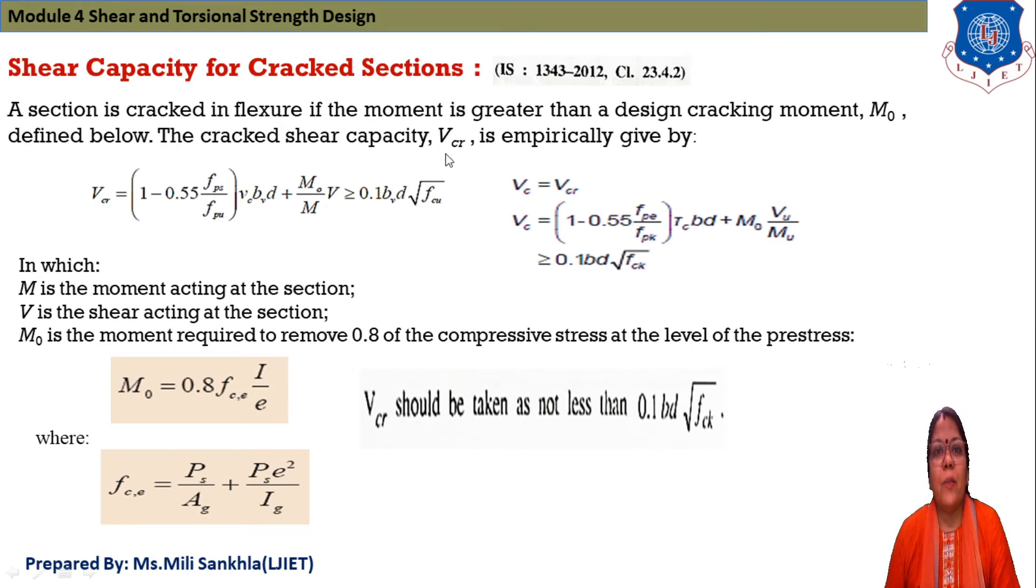VCR is equal to 1 minus 0.55 fps divided by FPU multiplied by VC into BV into D and plus MO divided by MV and this value is greater or equal to 0.1 BVD under root FCU. And we can write also this VC is equal to VCR.